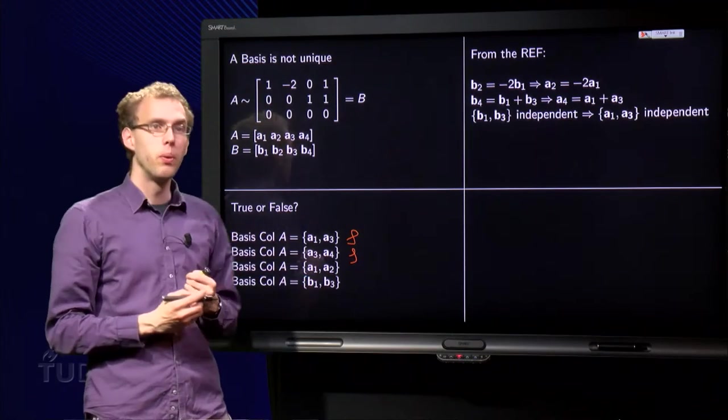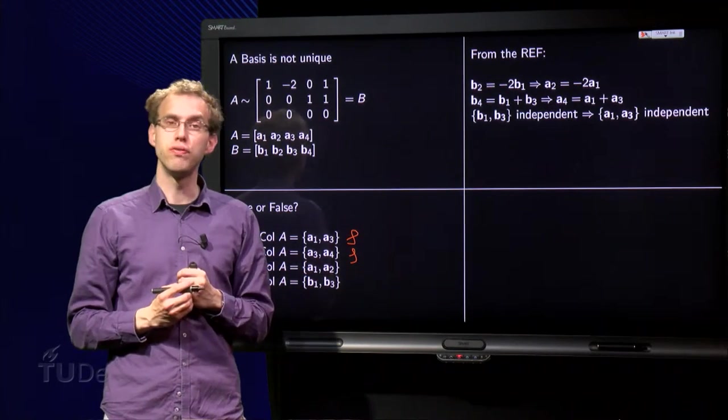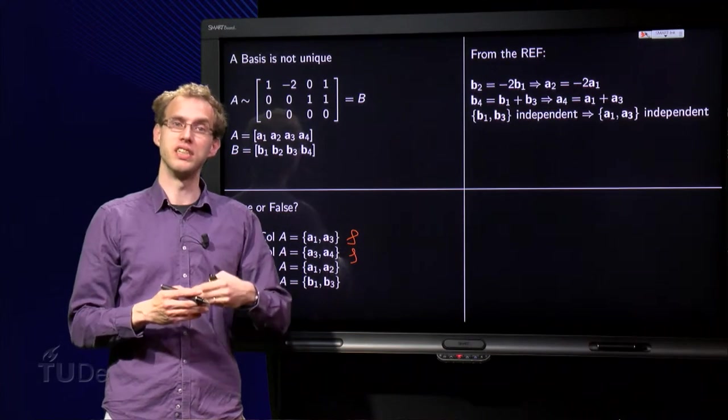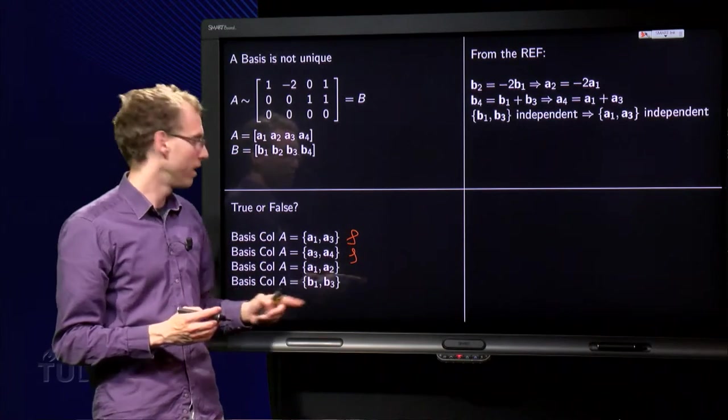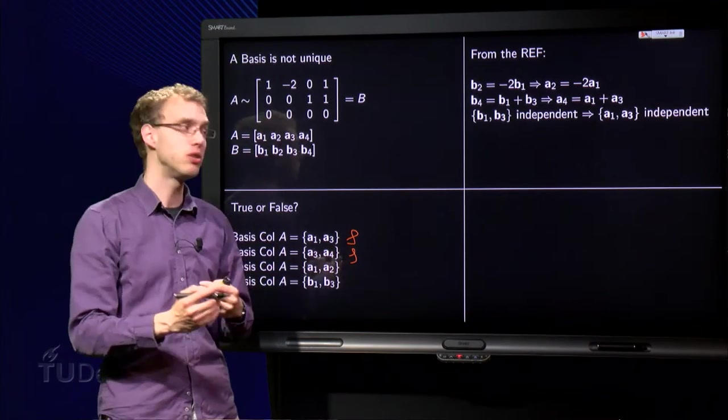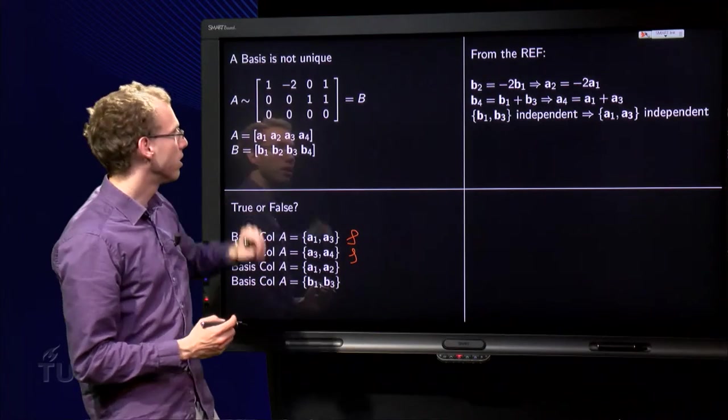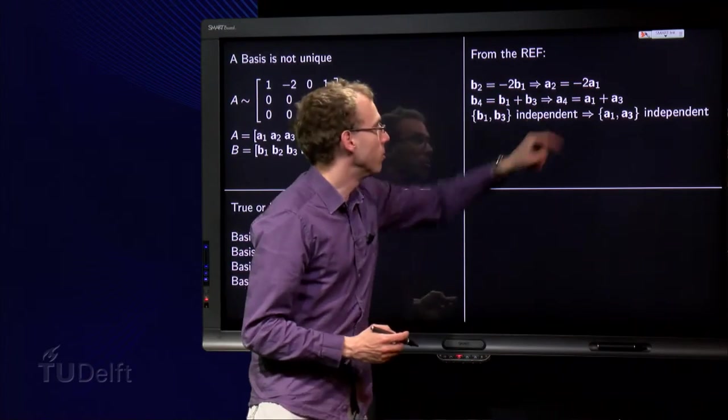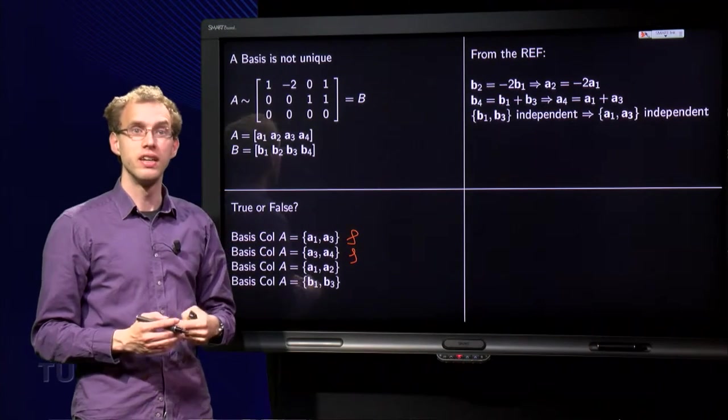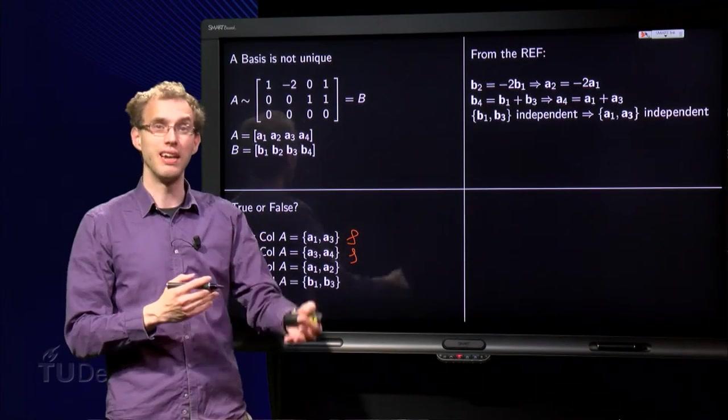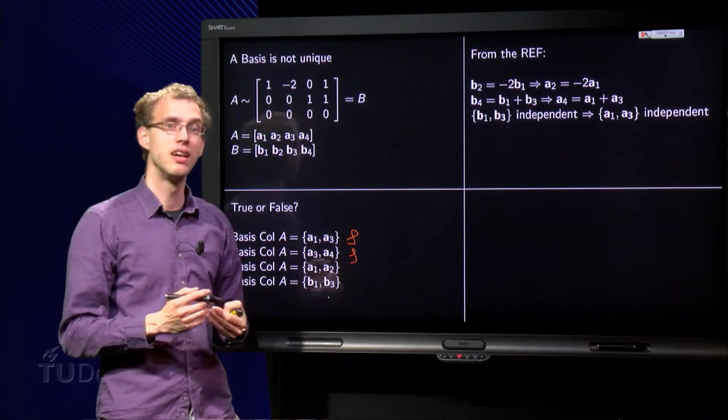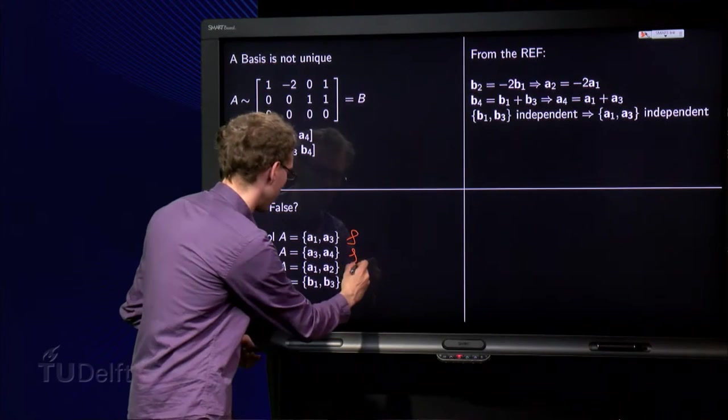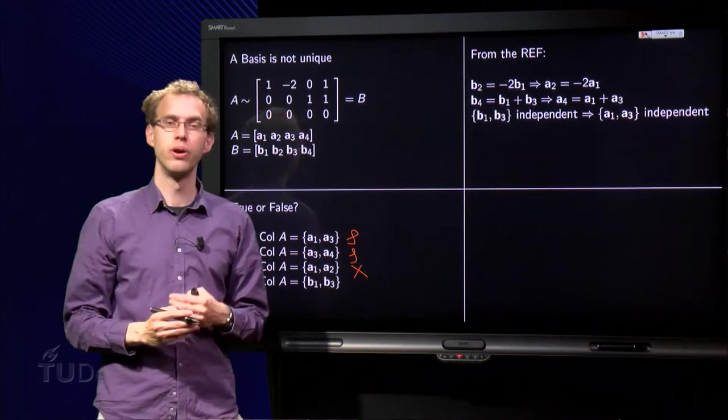Here, we have again two vectors in col A. The question is, is this a basis for col A? The set consisting of A1 and A2. But now you see, over here and over here, that A2 is a multiple of A1. That means that the set consisting of A1 and A2 is not independent, so that means that this cannot be a basis for col A.